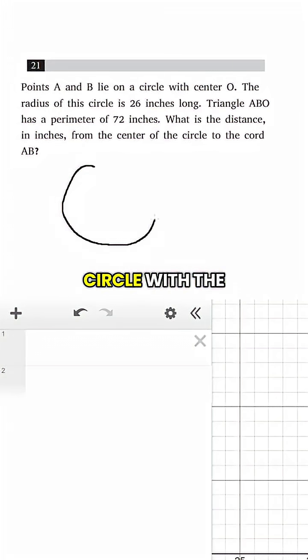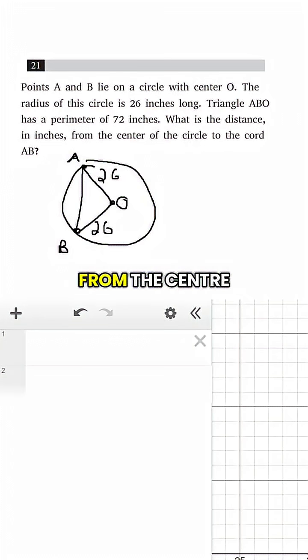So if we draw ourselves a circle with the center O, and then we put two points on it of A and B, and then we draw ourselves a triangle, if the radius of the circle is 26, then that means that this is 26 and this is 26, because the distance from the center to any point on the circle is always the radius.